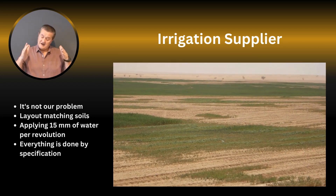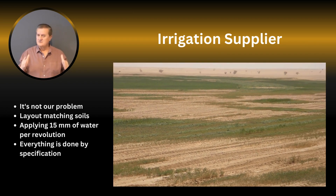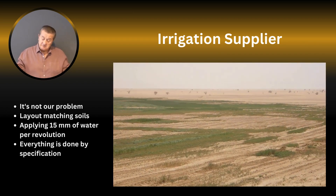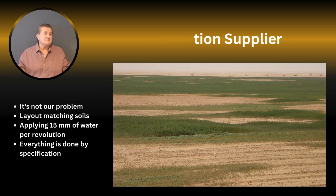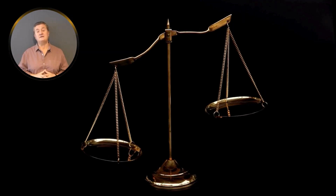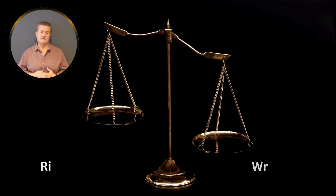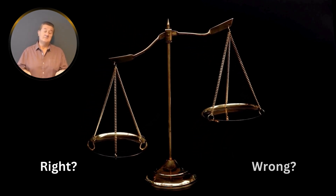The irrigation supplier continued: the layout is done exactly according to different soil types as the maps show, we are applying 15 millimeters of water per evolution per day, which is very easy to check — it's not our fault. Then the court engaged me as an independent expert witness to see which one is right and which one is wrong.